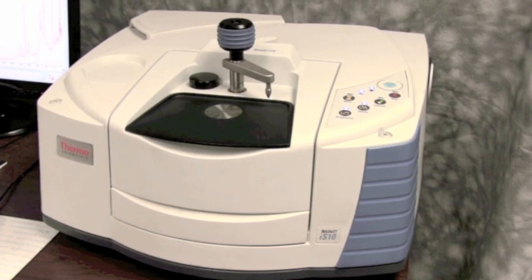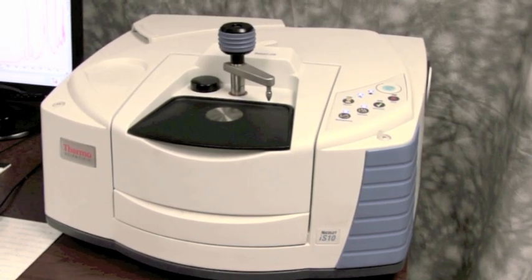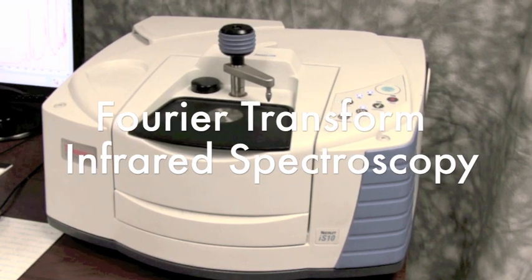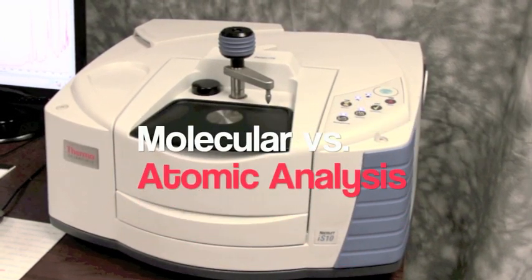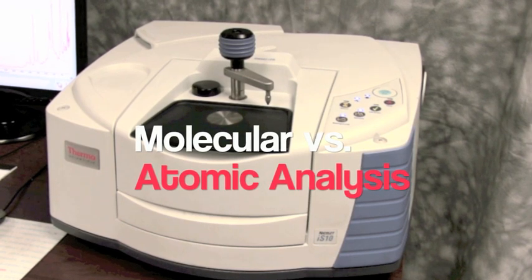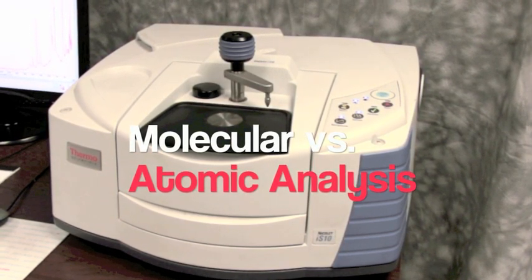We're going to talk about FTIR analysis. FTIR analysis is Fourier transform infrared spectroscopy. It's a molecular versus an atomic analysis, which means that we're going to look at the molecule, not at the individual atoms.